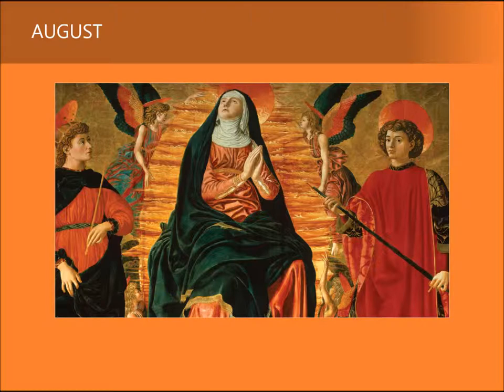Mary appears enclosed in an almond-shaped frame. Symbolically, this shape was first associated with Christ. However, the mandorla, as it's called, gradually extended to include the Virgin at the Assumption. The flame-coloured clouds within this giant halo-like shape suggest the Virgin's departure from her earthly life. The space-denying gold background we glimpse behind the Virgin and the two saints accompanying her remind the devout viewer of the belief in the mystery of Mary's Assumption into heaven.